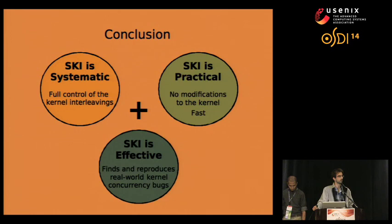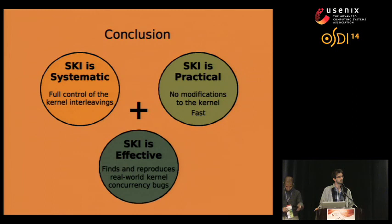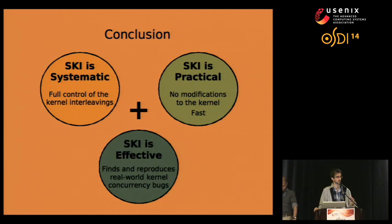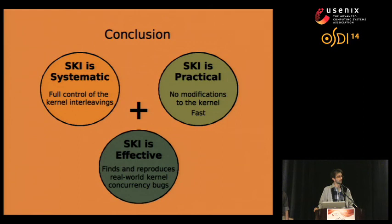Audience member: Could you quantify the effort of instrumenting a kernel and exposing locking primitives to the test runner instead of using a modified QEMU? What would be the cost of modifying the kernel rather than taking your approach? Speaker: That's a hard question to answer without actually doing it. DataCollider also proposed a data race detector and made the point that it would be quite complicated to implement such a tool for kernels, so they also chose a design that did not require significant kernel changes. We chose a different design, so I can't quantify the alternative.